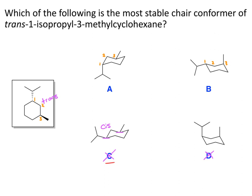So now just figure out which one of these is more stable. B is going to be more stable because the larger isopropyl group is equatorial. IPR is a common abbreviation for isopropyl.